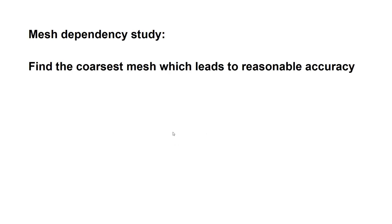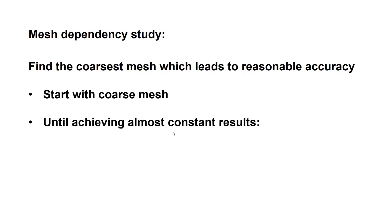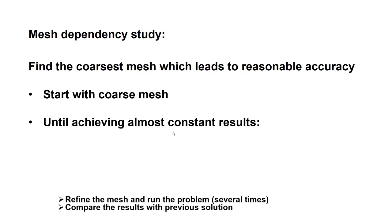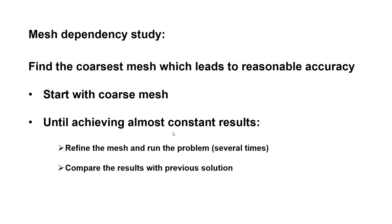For this purpose, we perform a mesh dependency study. We try to find the coarsest mesh which leads to reasonable accuracy. For the mesh dependency study, we start with a coarse mesh and then refine the mesh and run the problem until we achieve almost constant results. For result comparison, we usually choose an important output of the model, like displacement or stress at a special point.